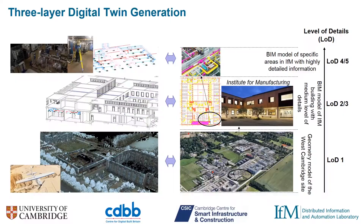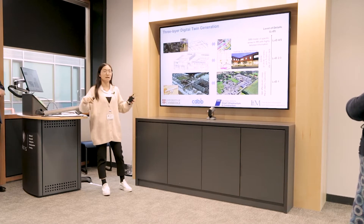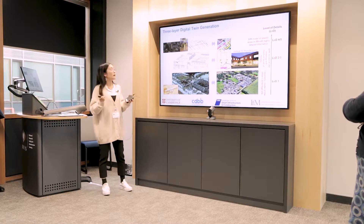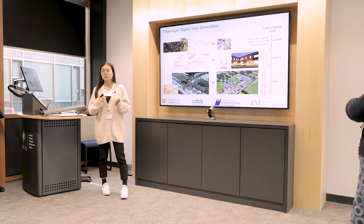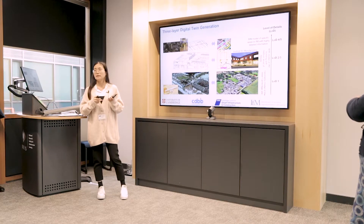We include four work packages. The first is we develop three-layer digital twin models. The first layer is the city level, where we use UAV methods to create a geometry model for the Western Cambridge site. The second is a building information model, and the third involves detailed spaces such as using laser scanners to scan the plant room.